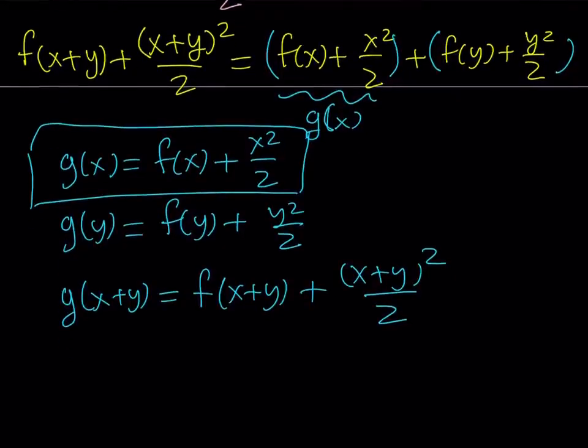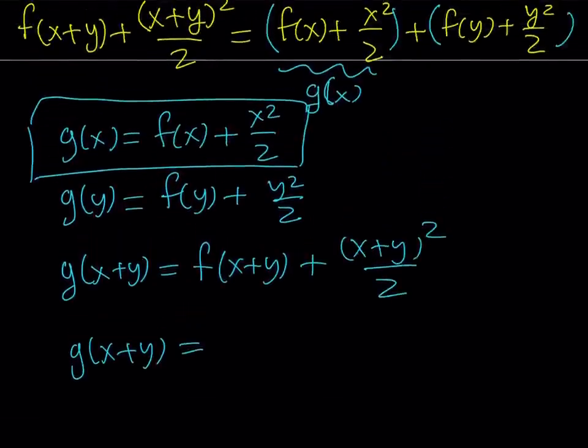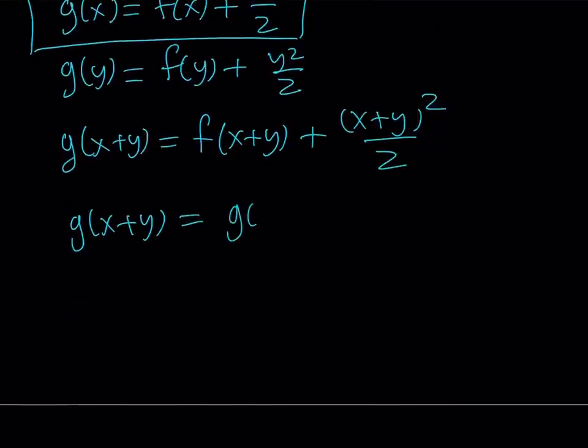Great. Now, let's go ahead and substitute everything into our equation. The left hand side becomes g(x+y). And I think you know why. The right hand side is made up of two pieces, g(x) and g(y). So it looks like this.